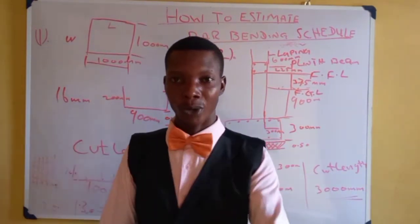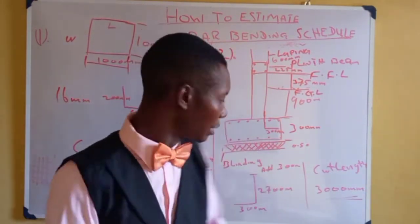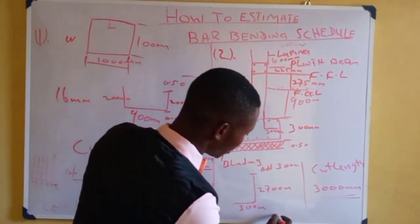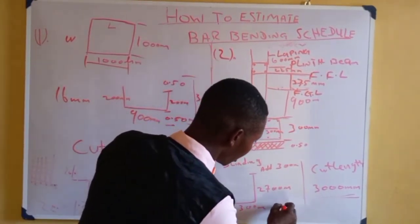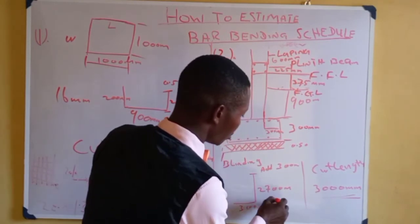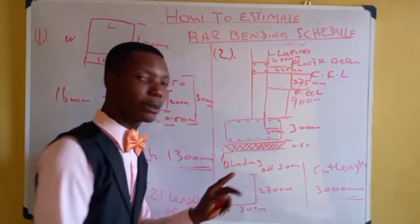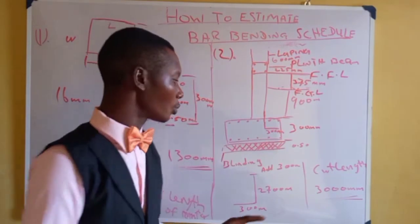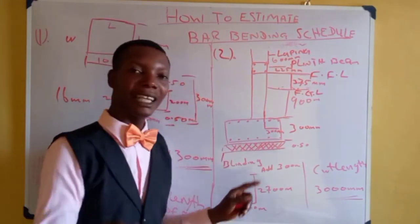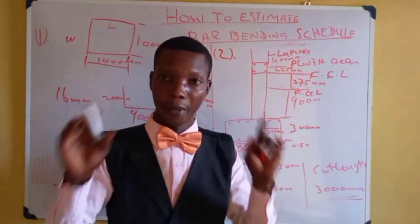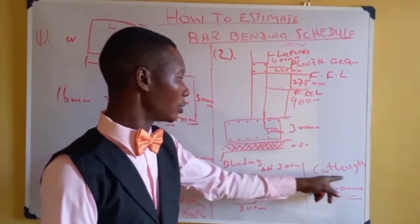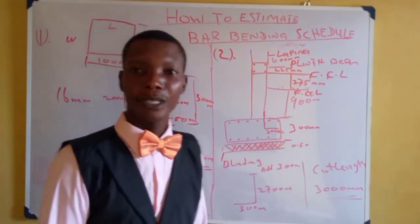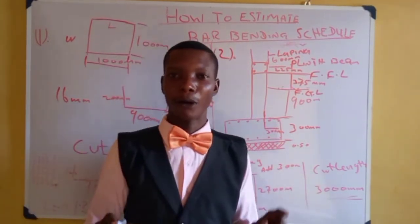For over-excavation and any other error that might occur, you add one foot which is approximately 300mm — making it 3,000mm, which is 3 meters. That 3 meters is your cut-off length for the column starter. In everything you are doing, your cut-off length should be approximately 3 meters.